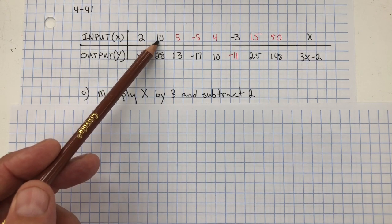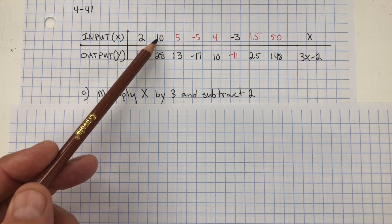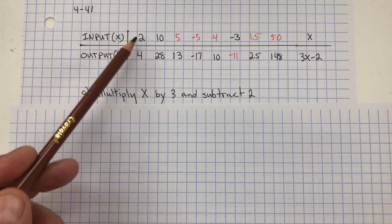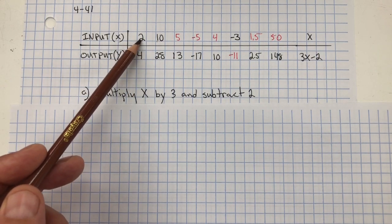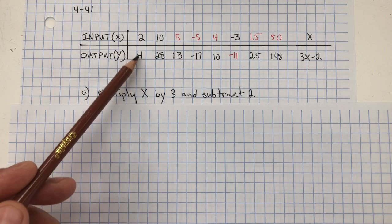3 multiplied by 10 is 30 minus 2 is 28. 3 multiplied by 2 is 6 minus 2 is 4.